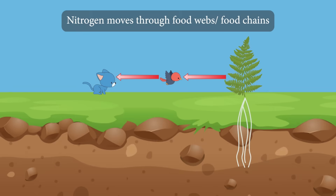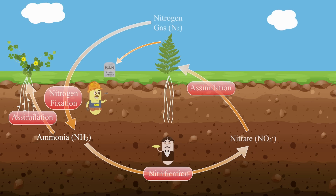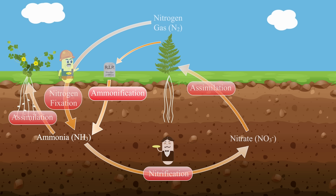Once nitrogen is inside of plants and used to build biomolecules, it can pass to other living things through food webs. When an animal eats the plant, the nitrogen-containing compounds in the plant move to the animal. When that animal gets eaten, nitrogen moves to its predator, and so on. Eventually, all living things die and decompose. This returns the nitrogen back to the soil as ammonia in a process called ammonification. This ammonia can now be used again by plants, or converted to nitrates by nitrification, and so nitrogen gets cycled around and around, over and over again.